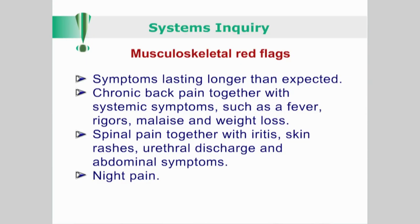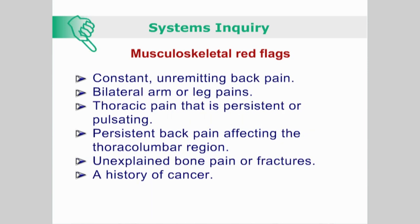Musculoskeletal system red flags include symptoms lasting longer than expected for that particular injury; chronic back pain together with systemic symptoms such as fever, rigors, malaise, and weight loss; spinal pain together with arthritis, skin rashes, urethral discharge, and abdominal symptoms; night pain; constant and unremitting back pain; bilateral arm or leg pains; thoracic pain that is persistent or pulsating; and persistent back pain affecting the thoracolumbar region.